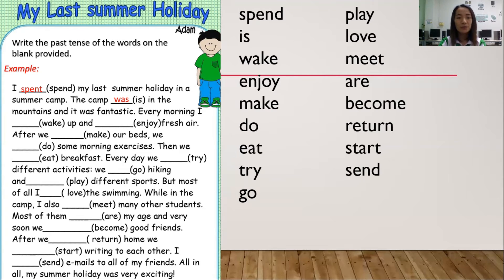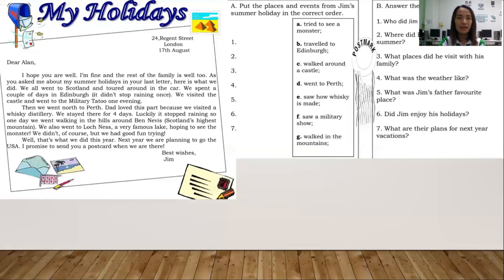Now let's move on to Part B of your activity. We have a letter here, and the title of the letter is 'My Holidays.' Jim wrote a letter to his friend Alan. Now let's read the letter first.